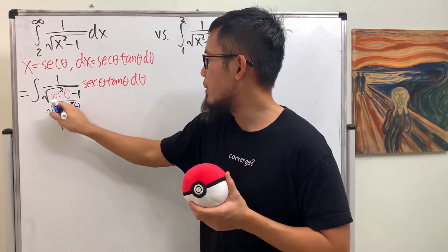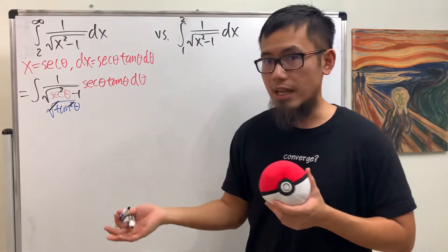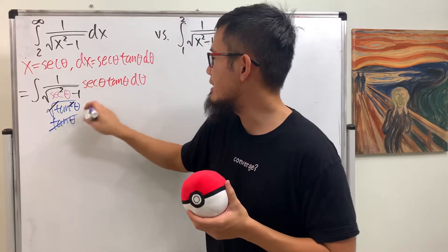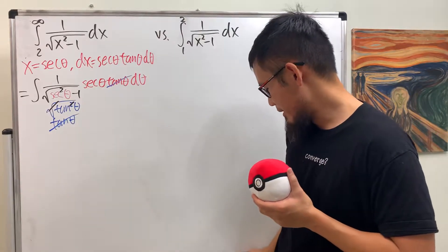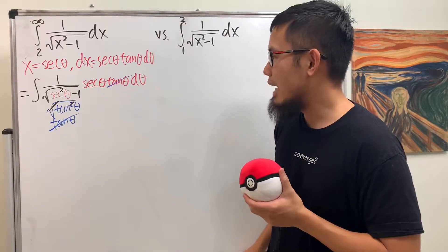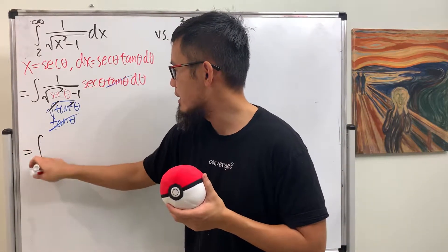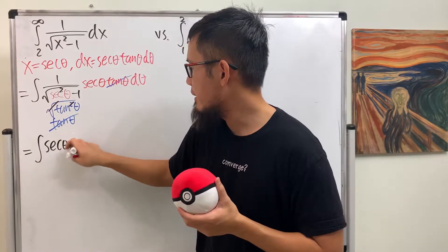And yes, they will cancel, so we have a tangent theta on the bottom, and the best part is this and that will also cancel. In other words, we just have to integrate secant theta. So this right here is the integral of secant theta d theta.